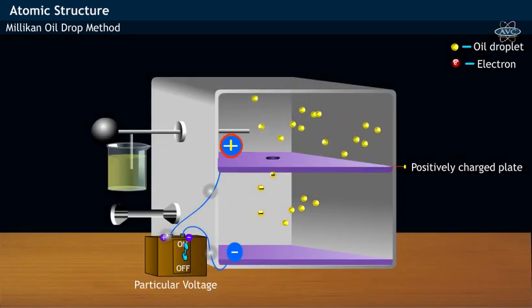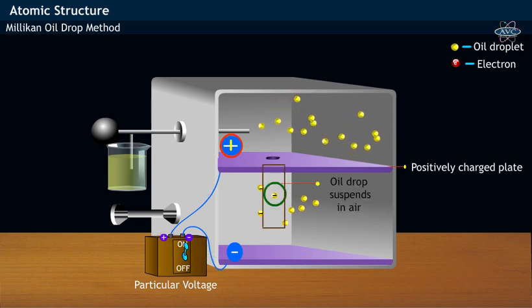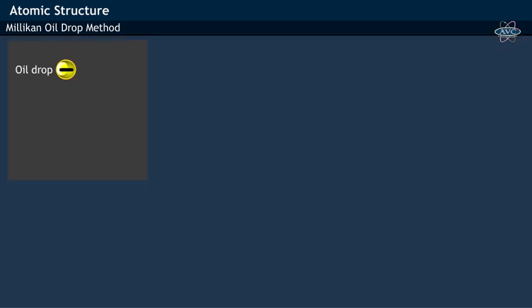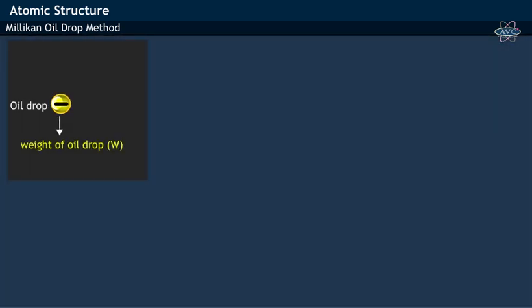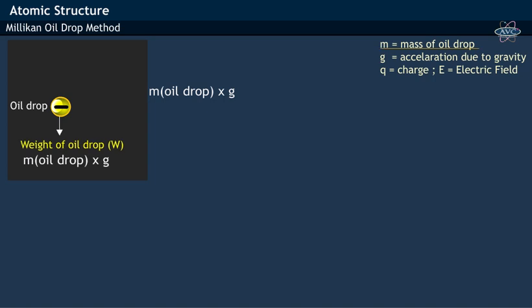At a particular voltage, the oil droplets suspend in air. At this point, the weight of oil droplet, which is the product of mass and acceleration due to gravity or mg, equals to the electrical force acting on the oil droplet.